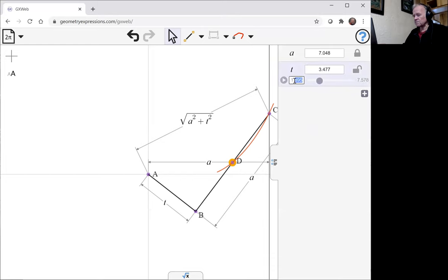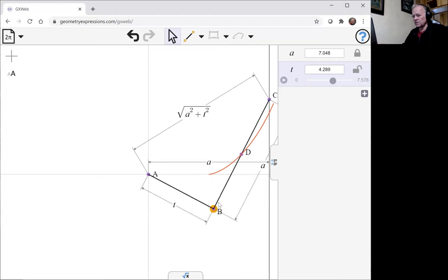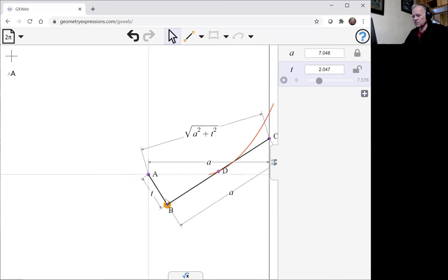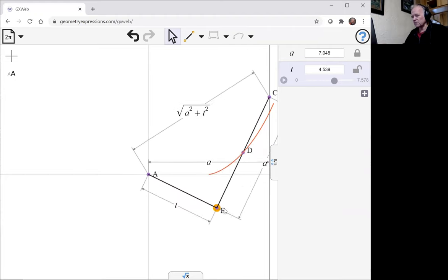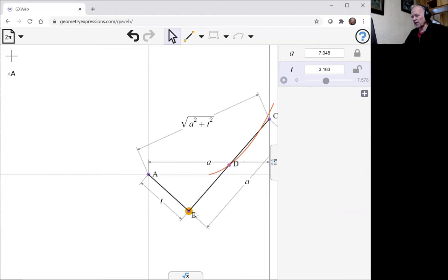The system has created its own bounds for t, but let's start it at zero. Now, we can see that as t goes to zero, the mechanism is going to collapse. We can't push this mechanism through to give us the other half of the curve.